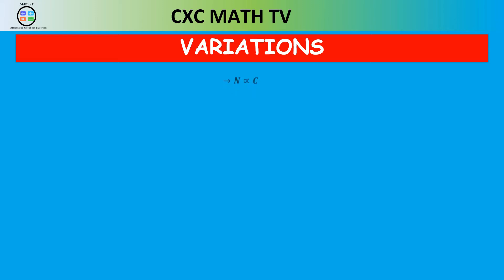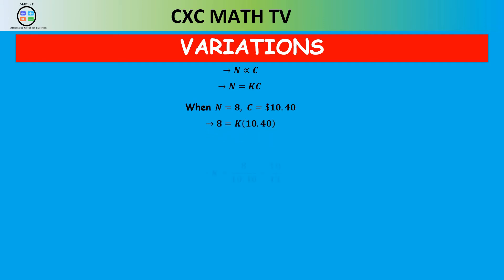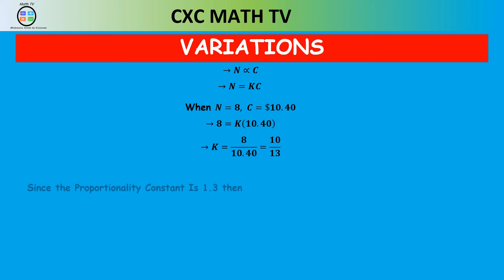By the definition of proportionality, n equals a constant times c. When n is 8, c is 10.40 — when we bought eight oranges the cost was $10.40 — so we substitute those values into the equation n equals kc, then transpose for k. So k is 8 divided by 10.40, which works out to be 10 over 13. This is known as the variation constant.